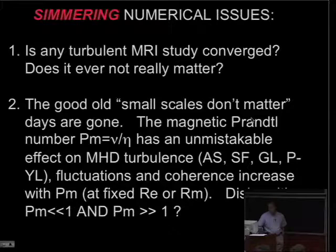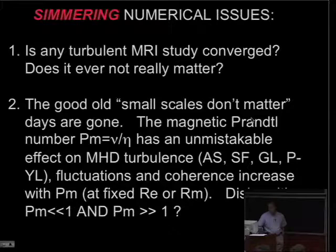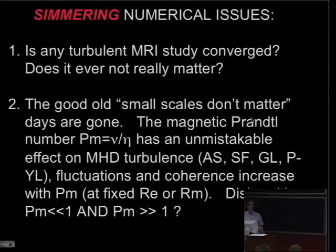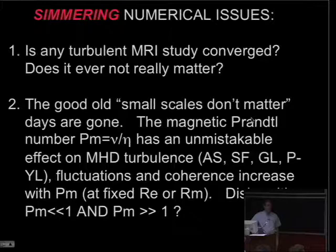So, simmering numerical issues that are still unresolved. Have we run any turbulent MRI study to the point where we can say it is converged? I think we're still not quite there. Does it matter that it's not converged? The old days of don't worry about the small scales, grid will take care of everything - those days seem to be gone.